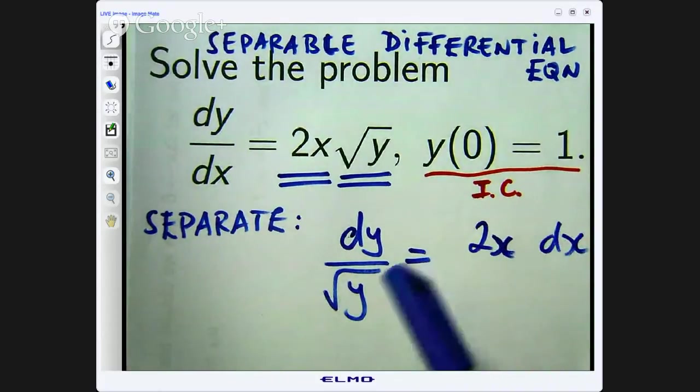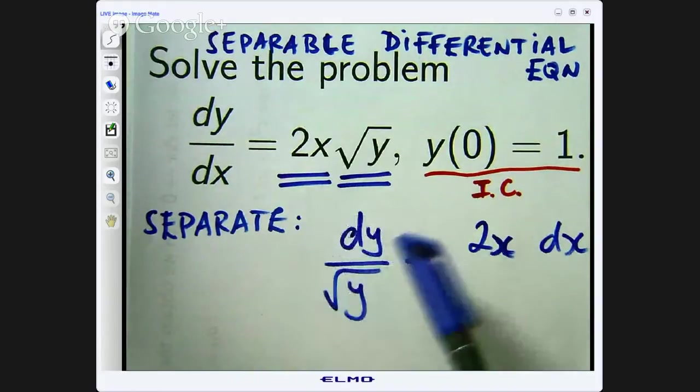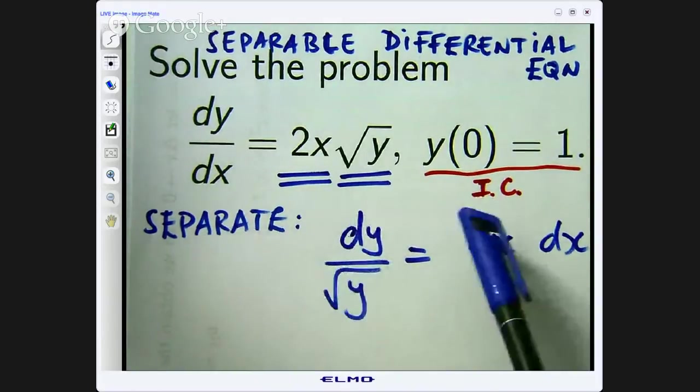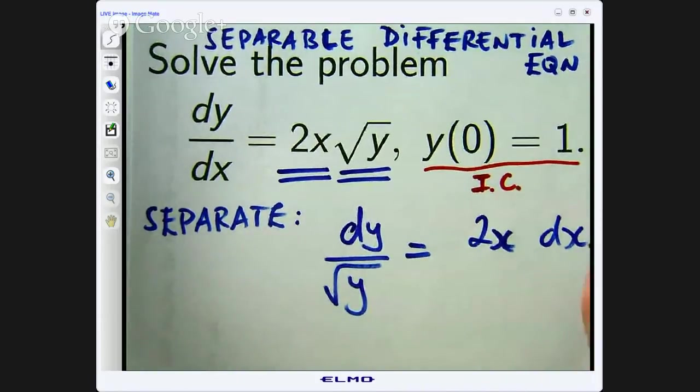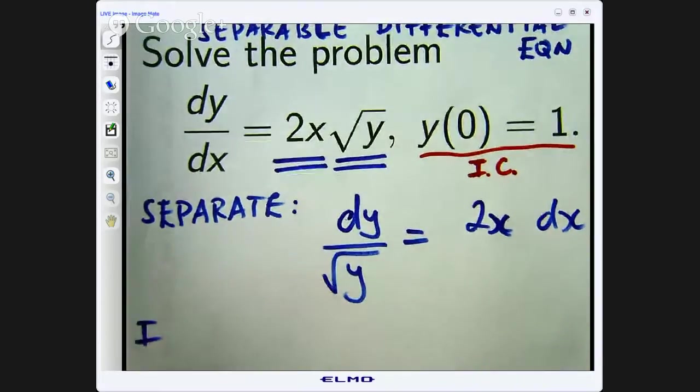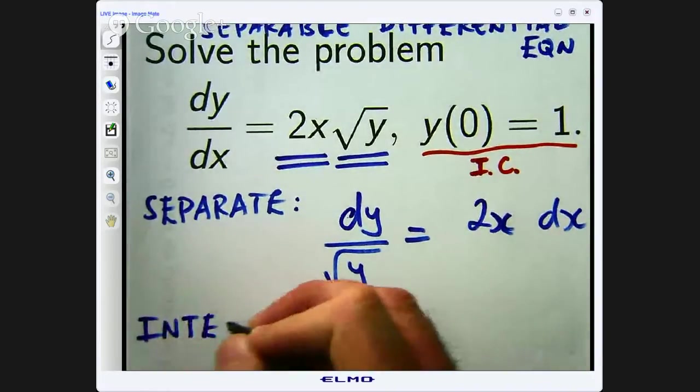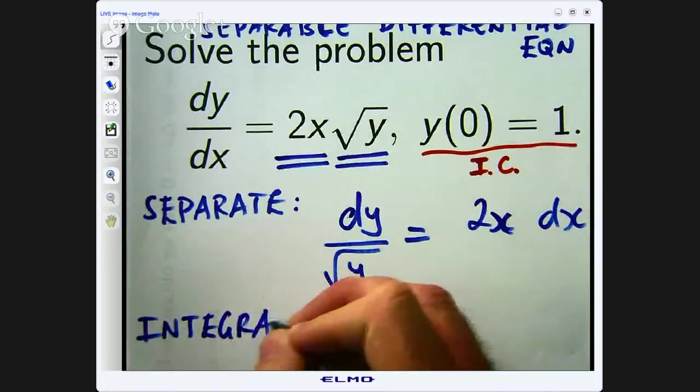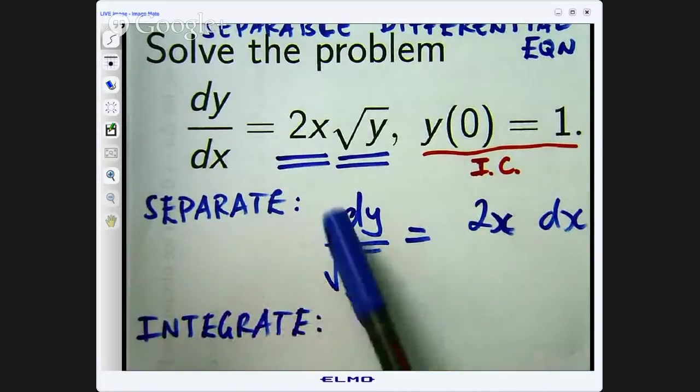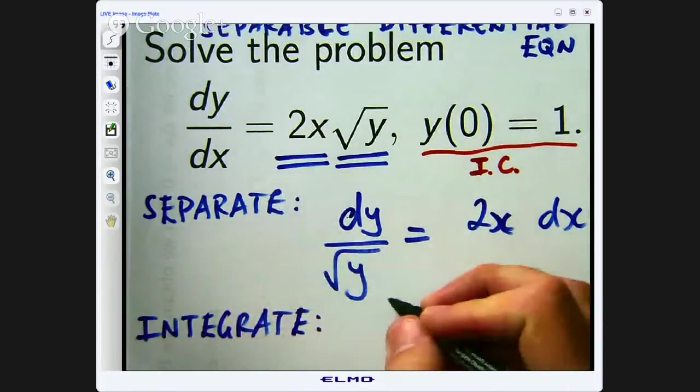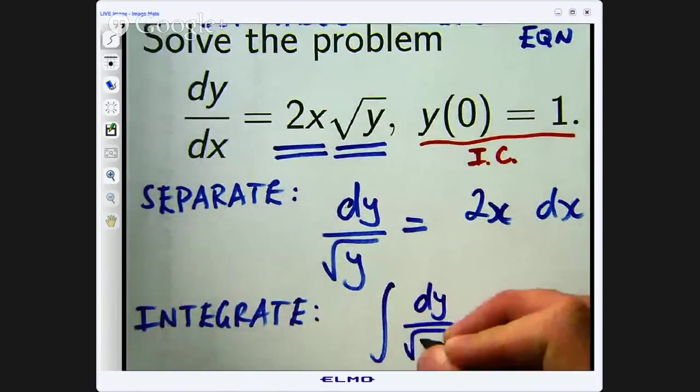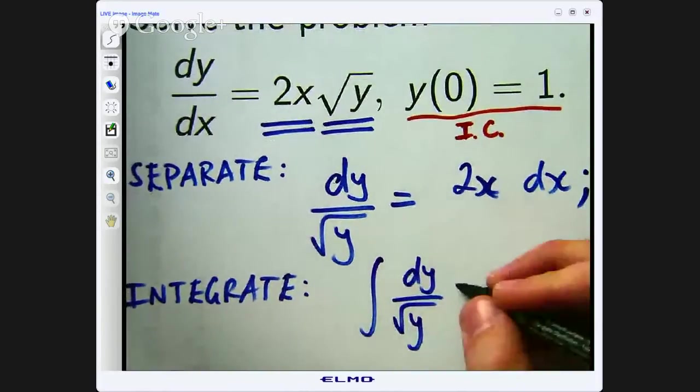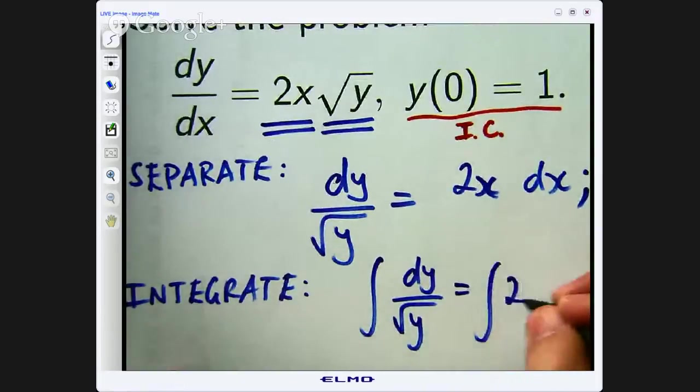Okay, now we will talk a bit more about that step in a minute but now what you can do is the second part of the solution method is to integrate both sides. So put an integral sign there, integral sign there and on the left hand side we are integrating with respect to y and on the right hand side we are integrating with respect to x.